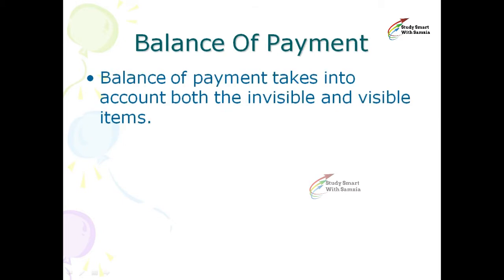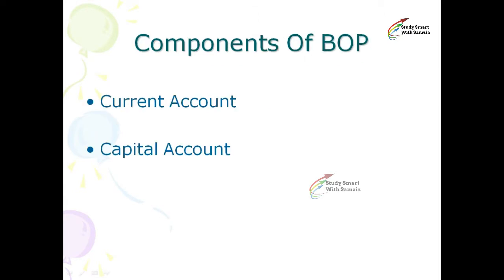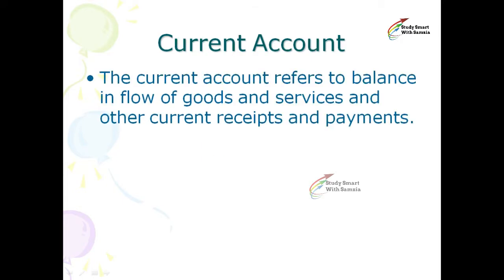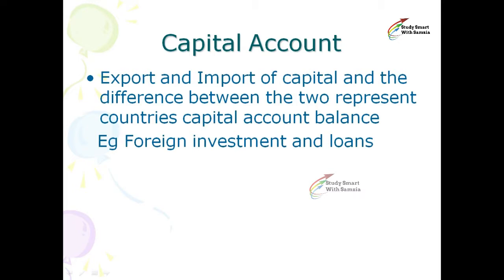Balance of payment takes into account both invisible and visible items. The components of BOP are the current account and the capital account. The current account refers to the balance and flow of goods and services and other current receipts and payments. The capital account covers the export and import of capital, and the difference between the two represents a country's capital account balance.